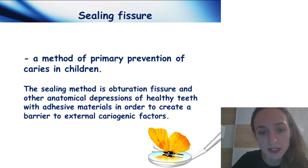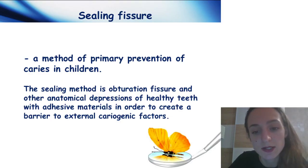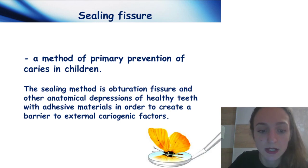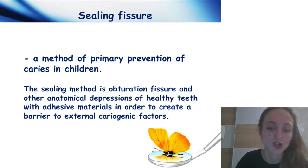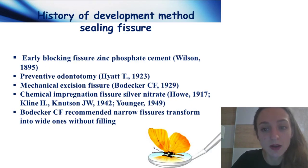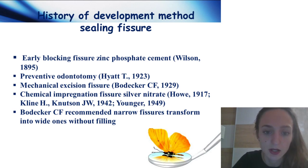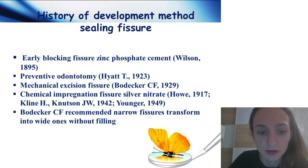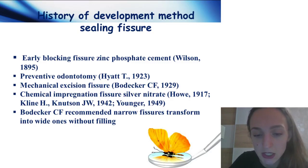Sealing fissures — a very interesting method. It is a method for primary prevention of caries in children, involving obturation of fissures and other anatomical depressions of healthy teeth with special adhesive materials in order to create a barrier to external cariogenic factors. History: early blocking of fissures with zinc phosphate cement, mechanical excision of fissures, chemical impregnation, and fissure silvering with silver nitrate.